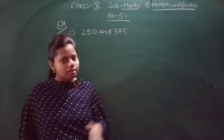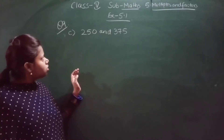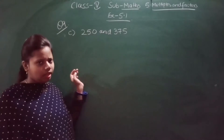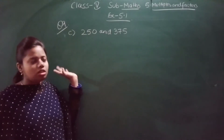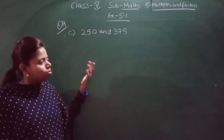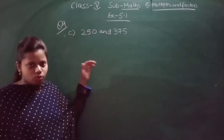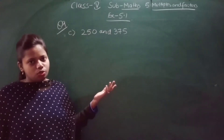So what is question number 9? Let us see. Write the first 5 multiples of each number in each of the following pairs, and list the common multiples for each pair if any. In question number 9 there are just 3 questions. I have chosen the question with the big number to show you how to do it, and in the same way you will do the other two also.